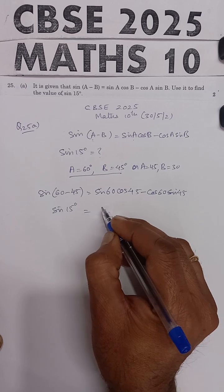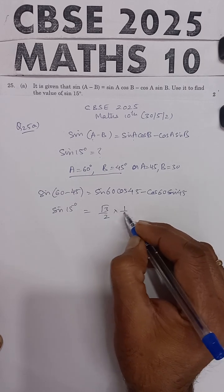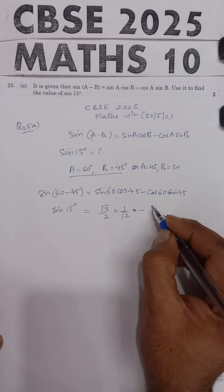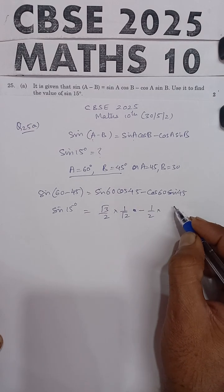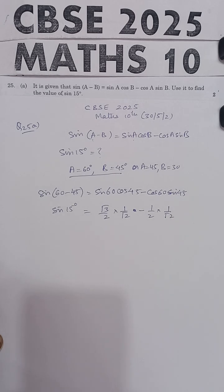Yaha par sin 60 ki value root 3 by 2 hai. Cos 45 is 1 by root 2, minus cos 60 is 1 by 2 and sin 45 is 1 upon root 2. You have to remember these values.